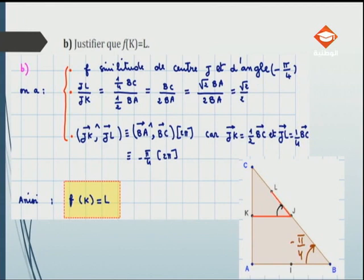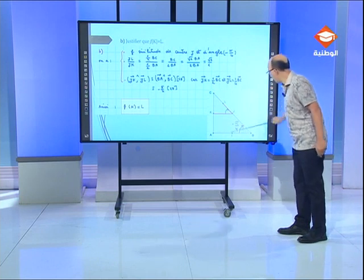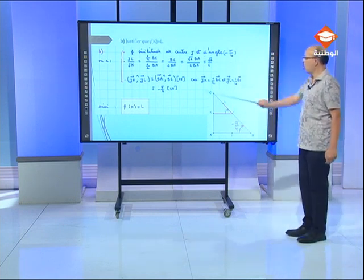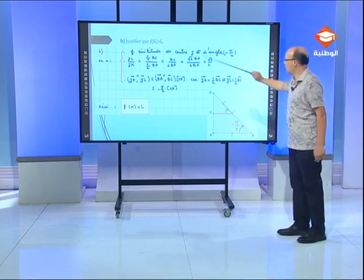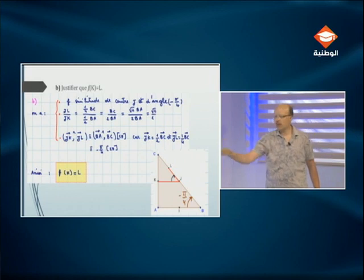L'angle (JK, JL) congru à (BA, BC) car JK et BA sont colinéaires de même sens, et JL et BC colinéaires de même sens. Or (BA, BC) = -π/4 car ABC est un triangle isocèle rectangle en A. Donc F est similitude de centre J, rapport JL/JK = √2/2, angle (JK, JL) = -π/4. Par suite, l'image de K est L.